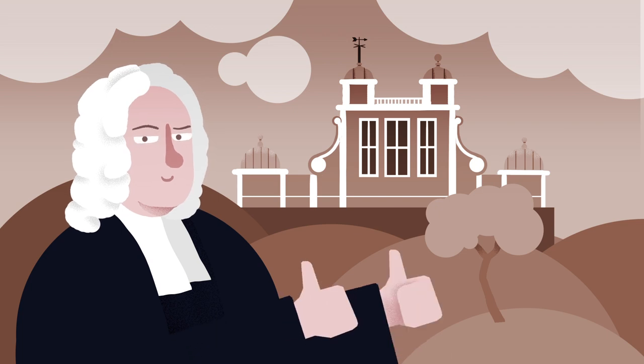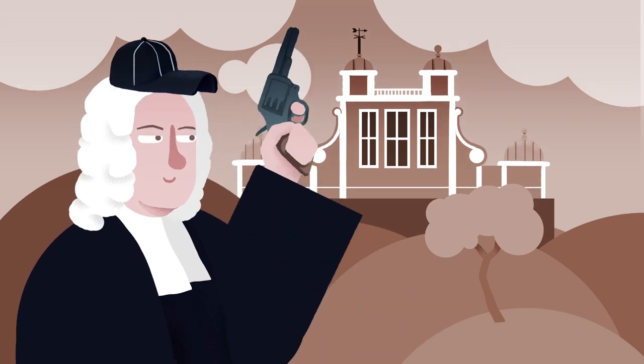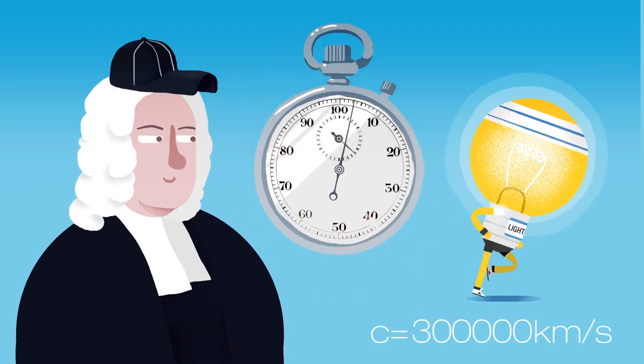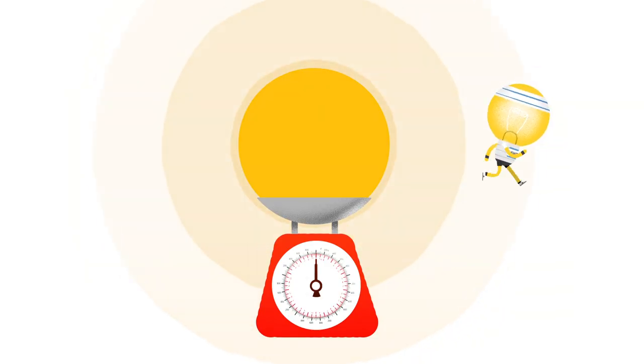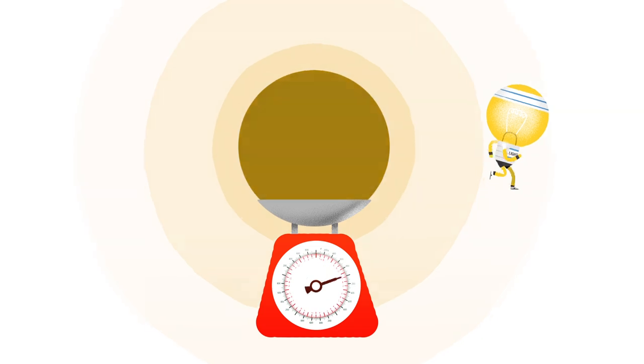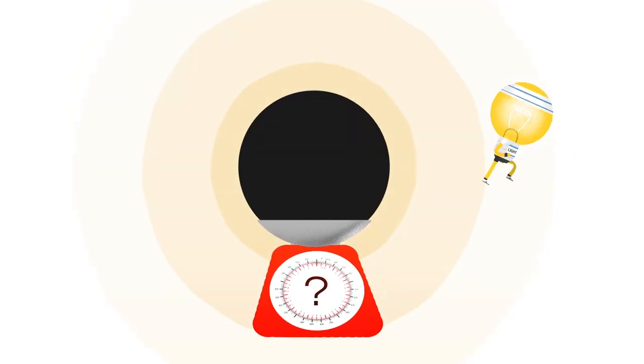James Bradley was an Astronomer Royal here at the Observatory in Greenwich and one of the amazing things he did was to work out an accurate value for the speed of light. This value was needed to calculate how heavy a star must be to pull light in and swallow it.